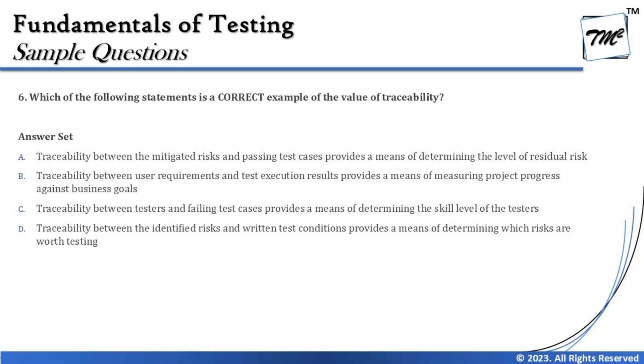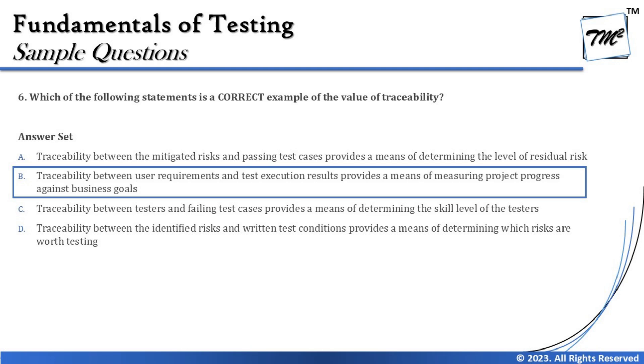The right answer for this question is B — traceability between user requirements and test execution results provides a means of measuring project progress against business goals. That's how a tricky question can become simple if you just pay a little attention. That's all from this tutorial — feel free to comment below with any queries. Keep learning, keep exploring, keep understanding the context. Thanks for watching and happy learning!